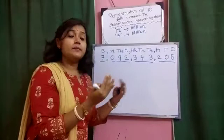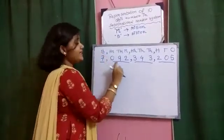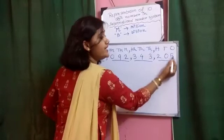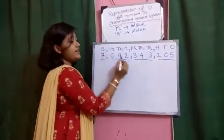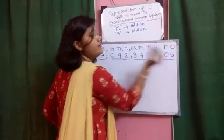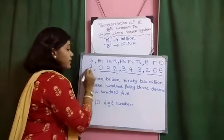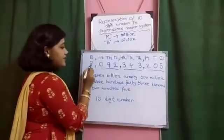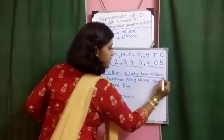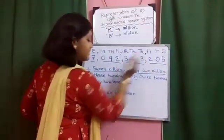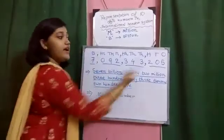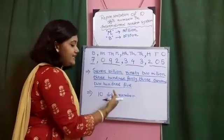Again, I am telling how to read this number: 7,092,343,205. Once again, 7,092,343,205. How have I written the name of this number? And how many digits are there? We have already calculated. It is a 10 digit number.